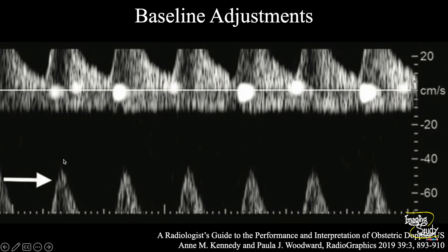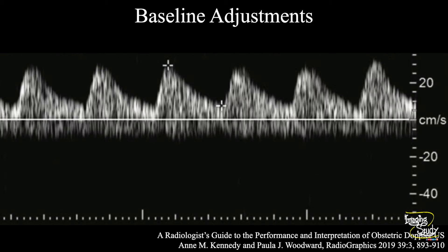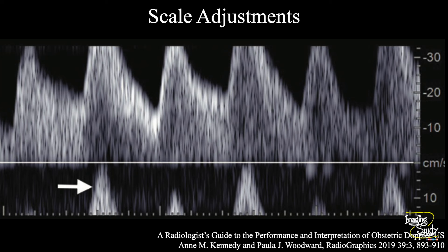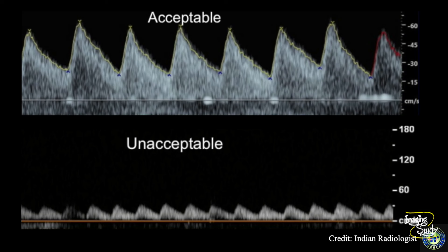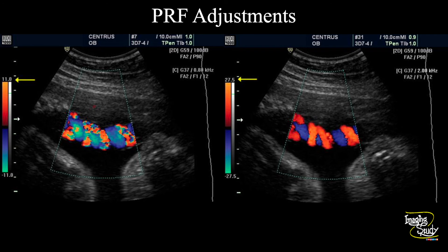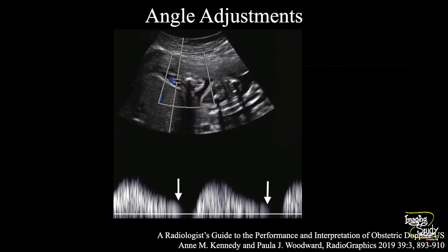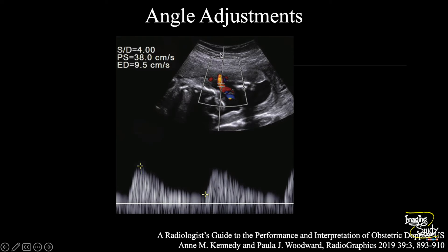You have to adjust the baseline — if the upper part of the waves are cut down, adjust the baseline using the baseline option in your machine so the waves look good. There is also a scale option, so you adjust the scale so the upper part is properly displayed. Always try to use bigger waves; small waves are very bad for measurement. Change your scale and change your PRF — that will be helpful. To reduce aliasing, you can increase the PRF.